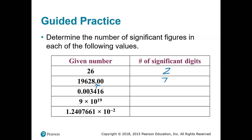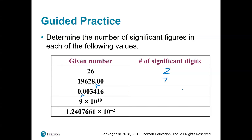In the third example, we have a decimal point, but the digits don't count until we reach a non-zero digit. So the leading zeros don't count. We only look at the digits starting with the three: three, four, one, six — that's four significant digits. For scientific notation, a number like 9 times 10 to some power has just one significant digit — only the nine counts, so there is only one significant digit in that number.